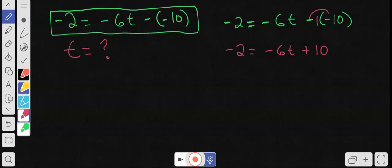After you do that, what's next? We want this t alone, so we need to move this 10 to the other side. The best way to do that is to do the opposite operation, which is subtraction, and we need to subtract 10 on both sides.